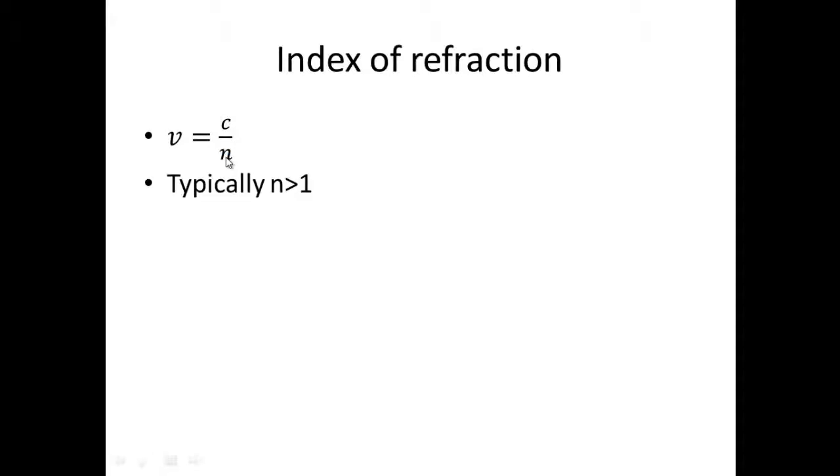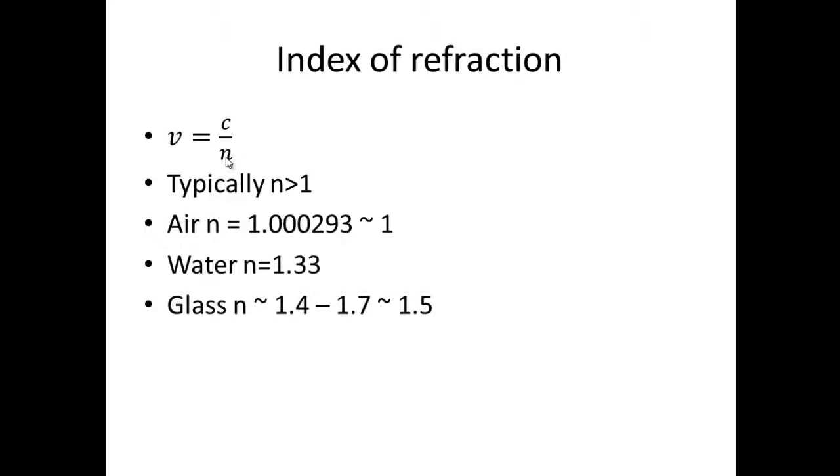And this n is typically greater than 1. There are some funny materials that even give you a negative n, but we won't deal with that. We'll stick with normal material that has an n greater than or equal to 1. Here are some sample typical ones we often tend to use. In air, the index of refraction is 1.000 something. And so it's very close to the vacuum. So we often take air as just having an n of 1, make things a little simpler.